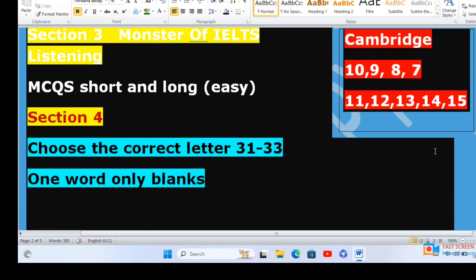In section 4, choose the correct letter 31 to 33, and one word only blanks would be there. The only problem in section 4 is the speed will be little fast. Just focus on the three keywords and follow the keywords. Practice makes a man perfect.